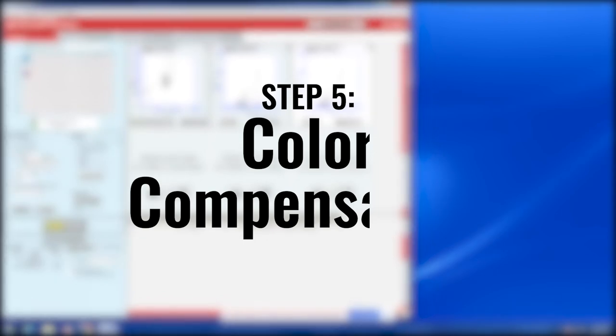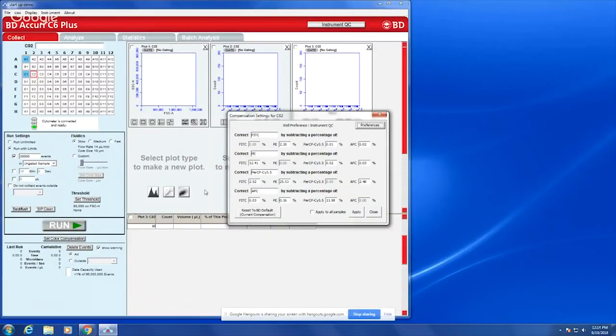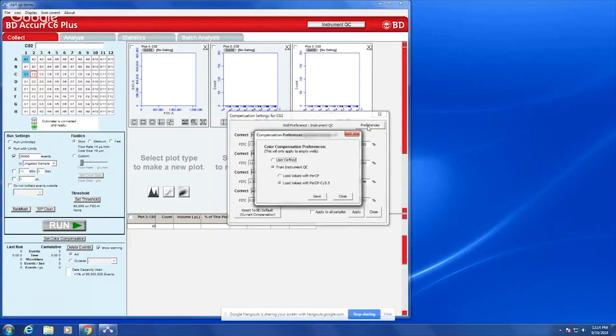On the computer, select Set Color Compensation directly under the Run button. Click on Preferences in the top right-hand corner. Choose from Instrument QC and select Load from Pair CP or Pair CP Psi 5.5, depending on the color you are using. Select Save.